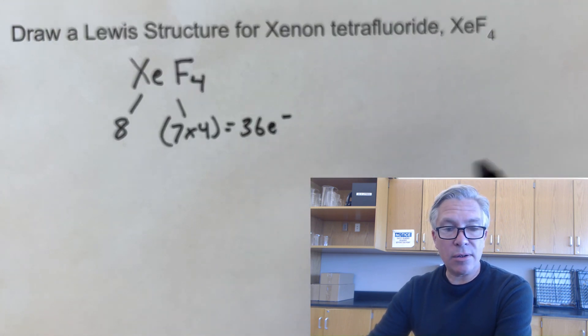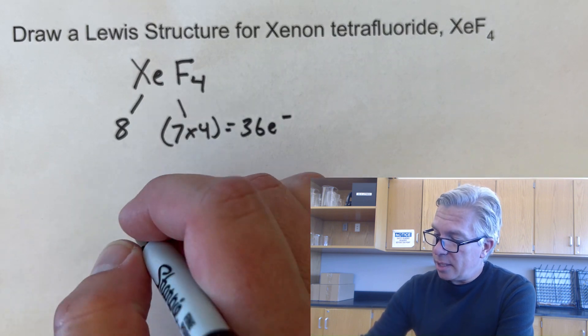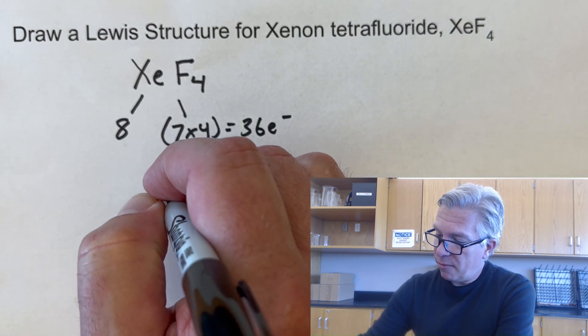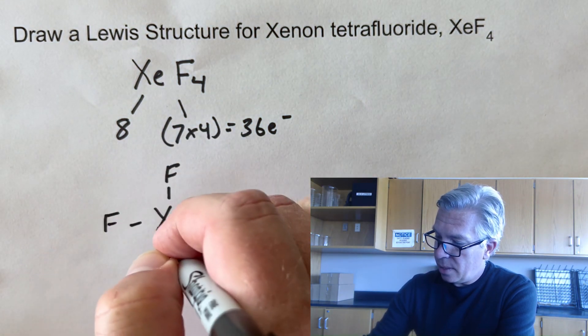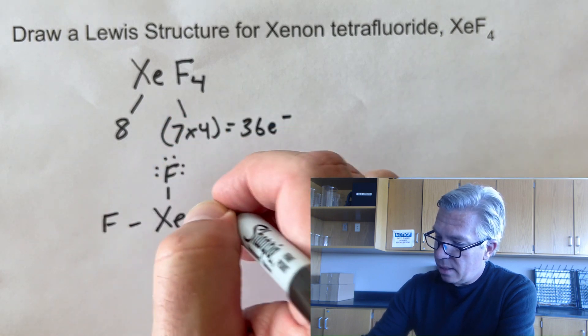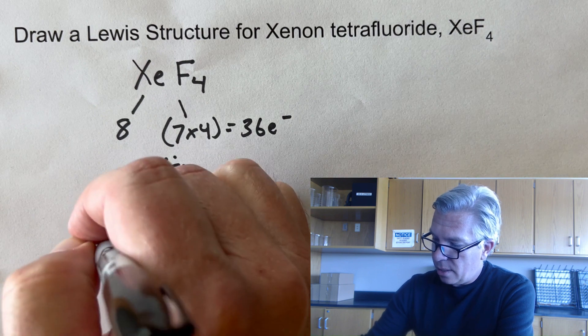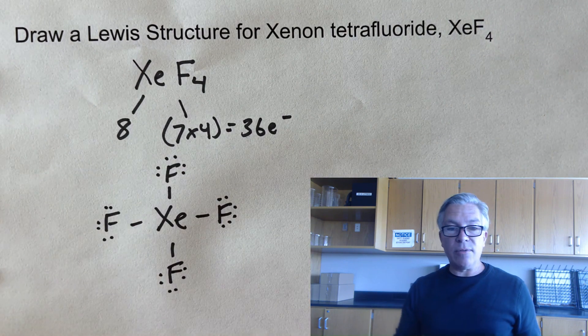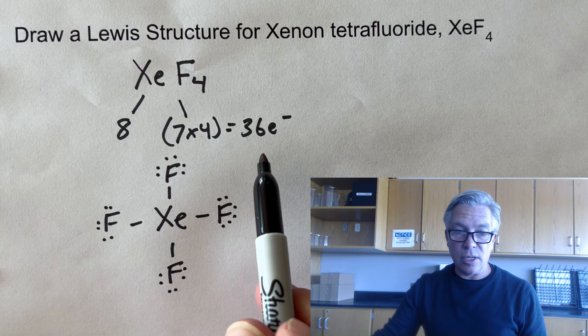So again, follow the steps, just go with them and do them religiously, and you'll be fine. Xenon is going to go in the middle. Fluorine is going to go around it with the dots that fluorine should get to make eight. Do that four times. And after I do that, I've used up 32 electrons, and I still have four more to go.